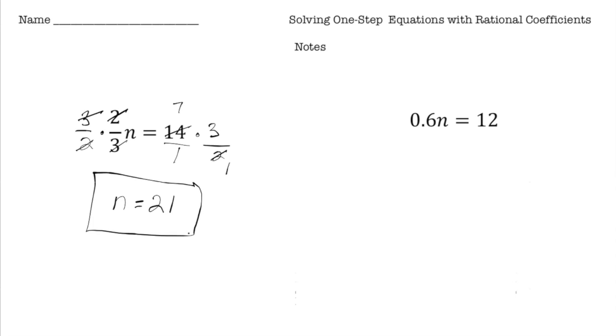All right, let's do one more. So here we have 6 tenths n equals 12. Now before I solve it using a decimal, you could just convert 6 tenths into fraction form. So it'd be 6 tenths n equals 12. And then do the exact same thing we did over here where we divide by multiplying by the reciprocal. So sometimes you might want to do that instead.